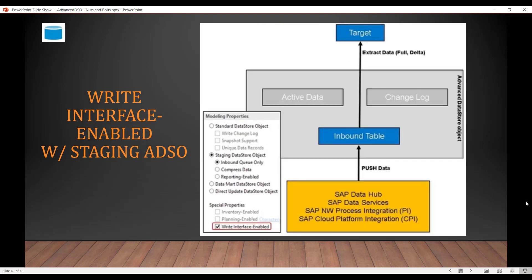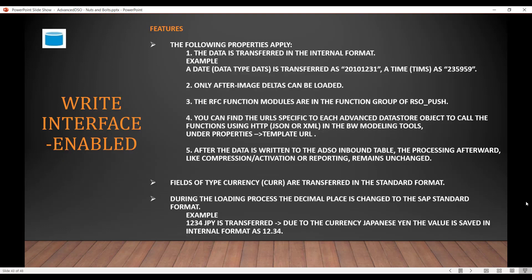Write Interface Enabled can also be used with a staging ADSO. In that scenario, it's inbound queue only and there is just one table. The data is pushed to the inbound table, and if you want to extract it to further targets you can do a full or delta from the inbound table.